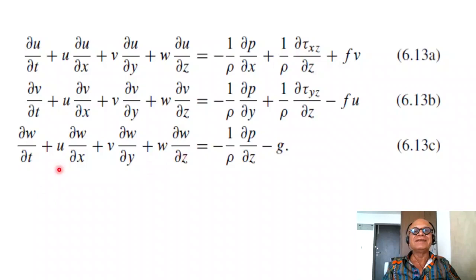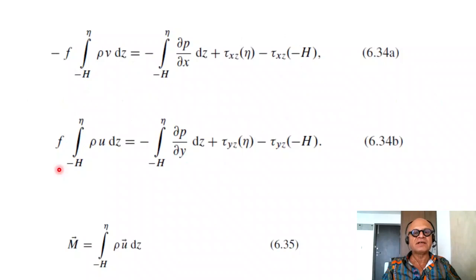And, of course, we derived the hydrostatic balance out of this by assuming the W dt, the total derivative of W, the acceleration term, is zero for large-scale circulation. Once we do that, we can, again, integrate from the bottom to the surface height of this simplified equation.